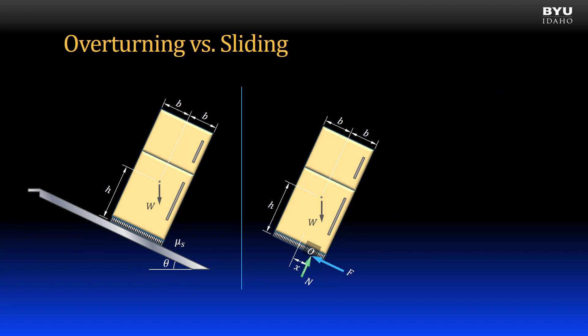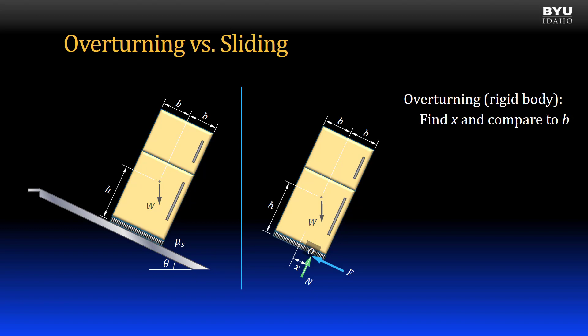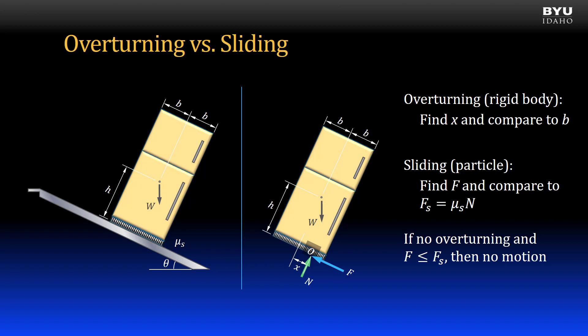Sometimes we want to determine whether an object will overturn or slide — these are two separate analyses. For overturning, we treat it as a rigid body, find X, and compare it to B. For sliding, we analyze it as a particle, find the friction force F, and compare it to the static friction force. If F is greater than the static friction force then it will slide. If there is no overturning and F is less than or equal to the static friction force, the object is stable and there is no motion.